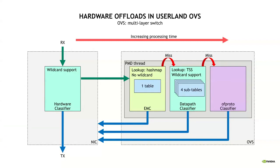The first stage is the exact match cache, which matches packets against fully specified flows. The match is simple and fast, but the cache is quickly saturated. The second stage is the datapath classifier, where flow specifications support wildcards to describe megaflows. It implements tuple-space search using four subtables covering increasingly specific flow matches. The four subtables must all miss one after the other for the search to fail. The last stage is the OpenFlow layer, where the rules are executed as specified by the user. OVS will attempt to collapse the processing pipeline described by the OpenFlow configuration into megaflows that will be inserted into the datapath classifier.